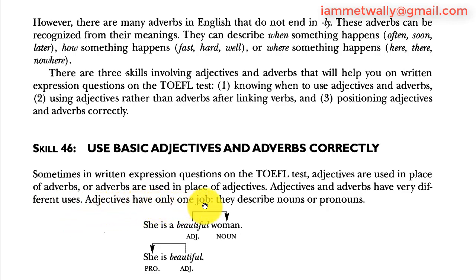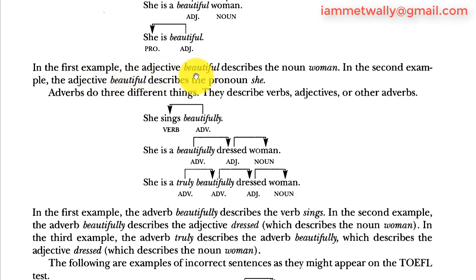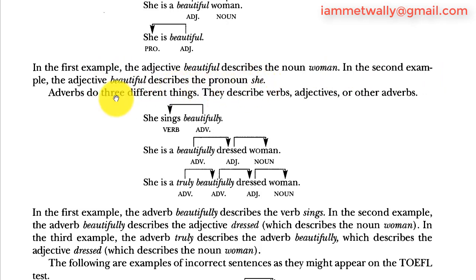Adjectives have only one job: they describe nouns or pronouns. For example, 'She's a beautiful woman' — beautiful describes the noun woman. 'She's beautiful' — beautiful describes the pronoun she. In the first example the adjective beautiful describes the noun woman, and in the second example it describes the pronoun she.